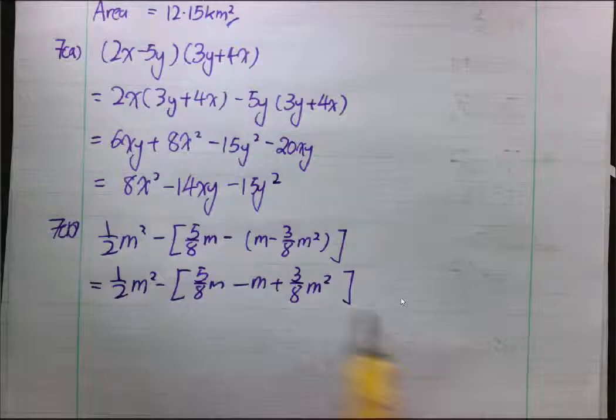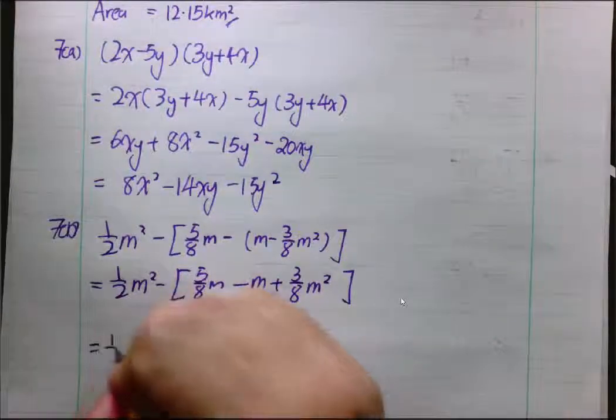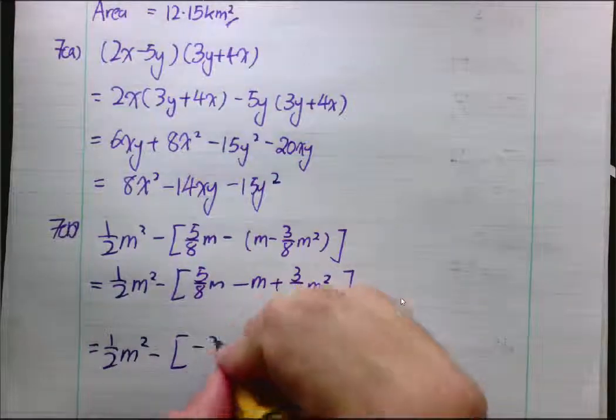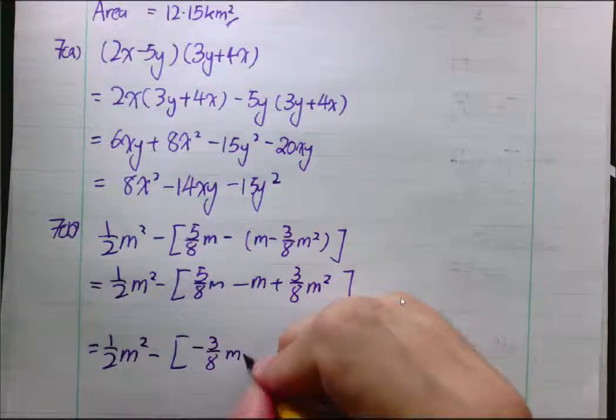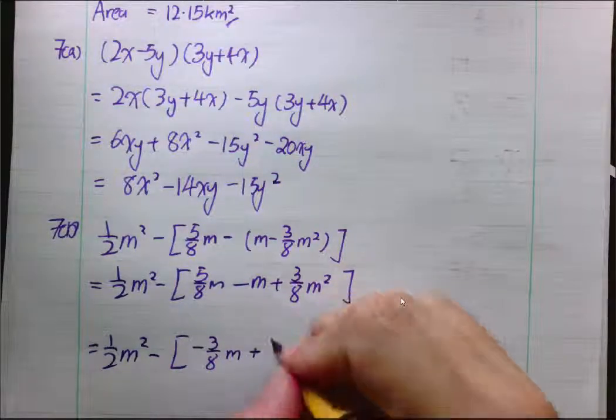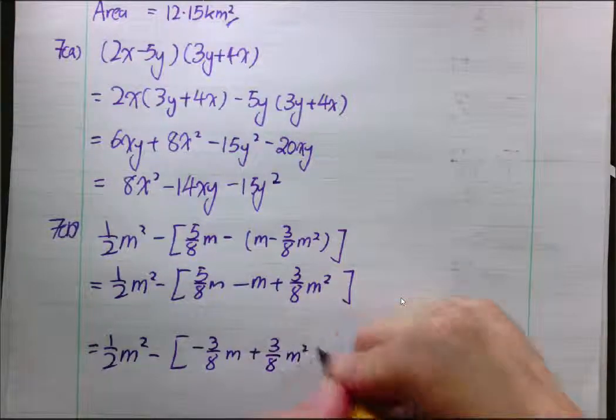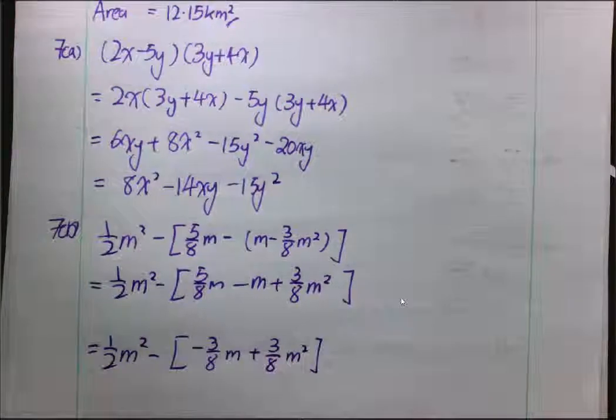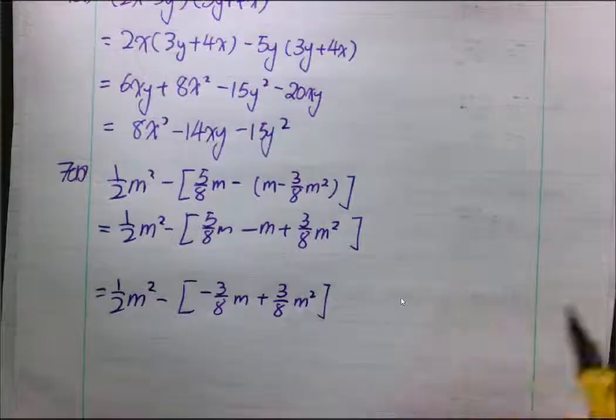Down here, let's try to simplify what we have in these large brackets first. So, what I have is half m² minus, here is negative 3 over 8m plus 3 over 8m². Because 5/8 minus 1m is negative 3 over 8m.